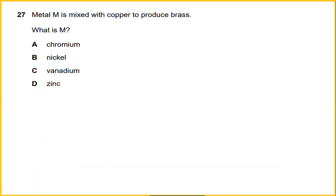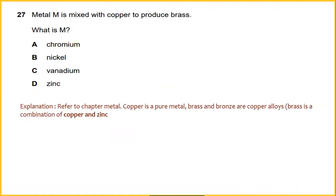Metal M is mixed with copper to produce brass. What is M? I would say refer to chapter metal. Copper is pure metal. Brass and bronze are copper alloys. Brass is a combination of copper and zinc. So I would say that the answer for this is D, zinc.